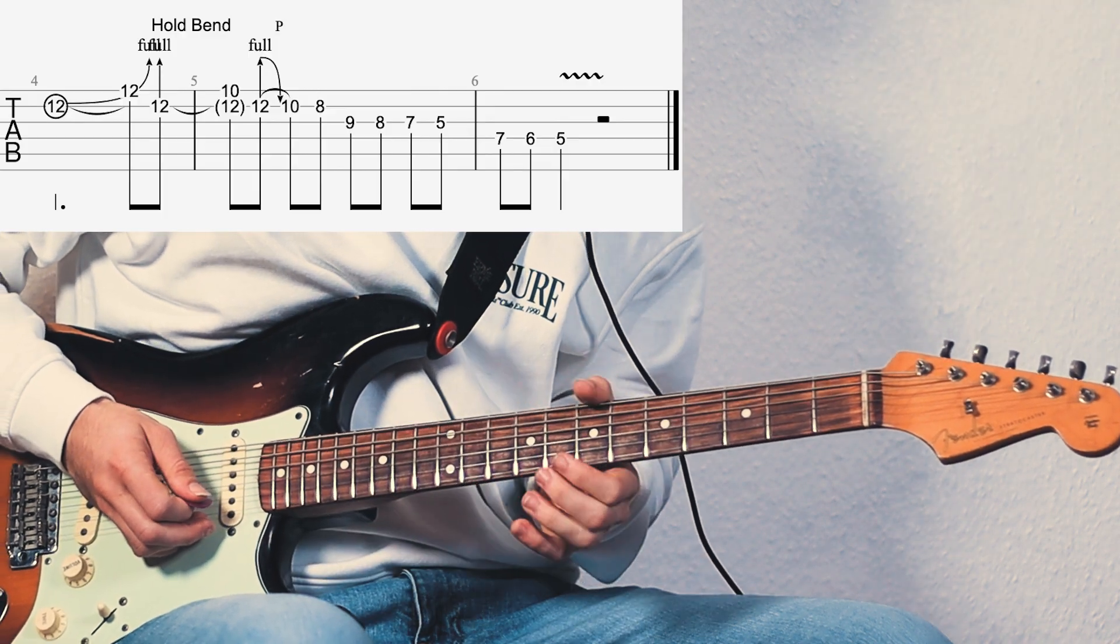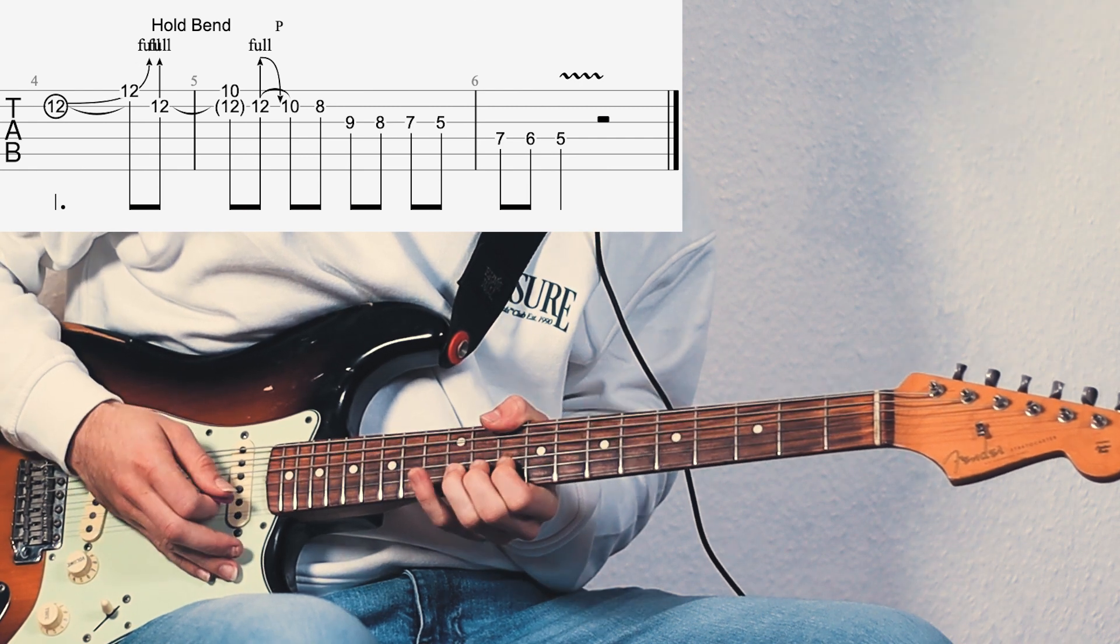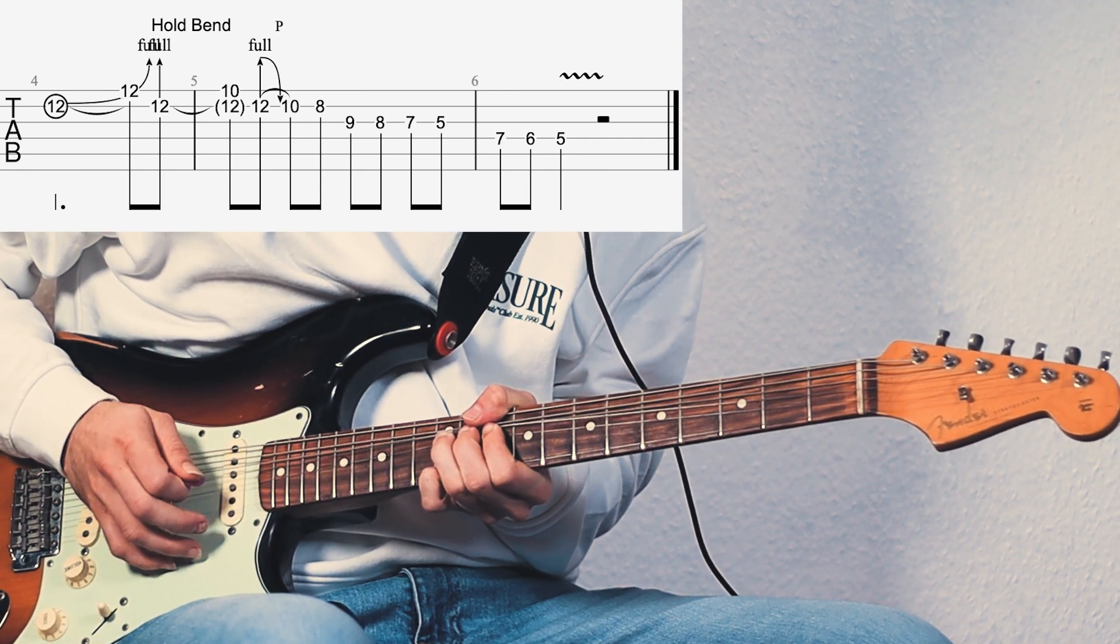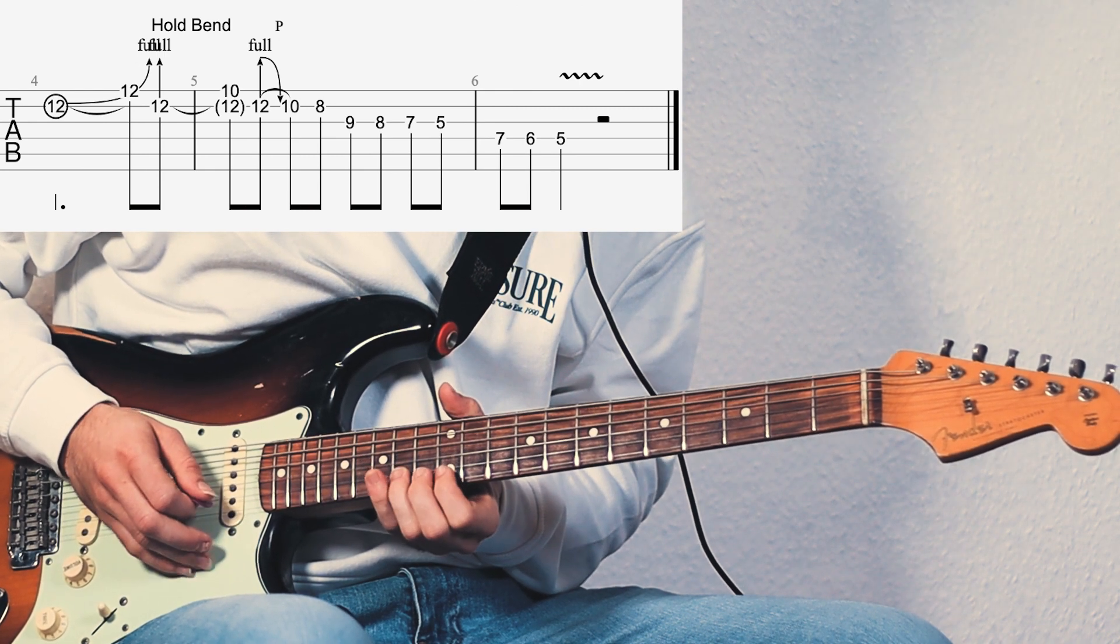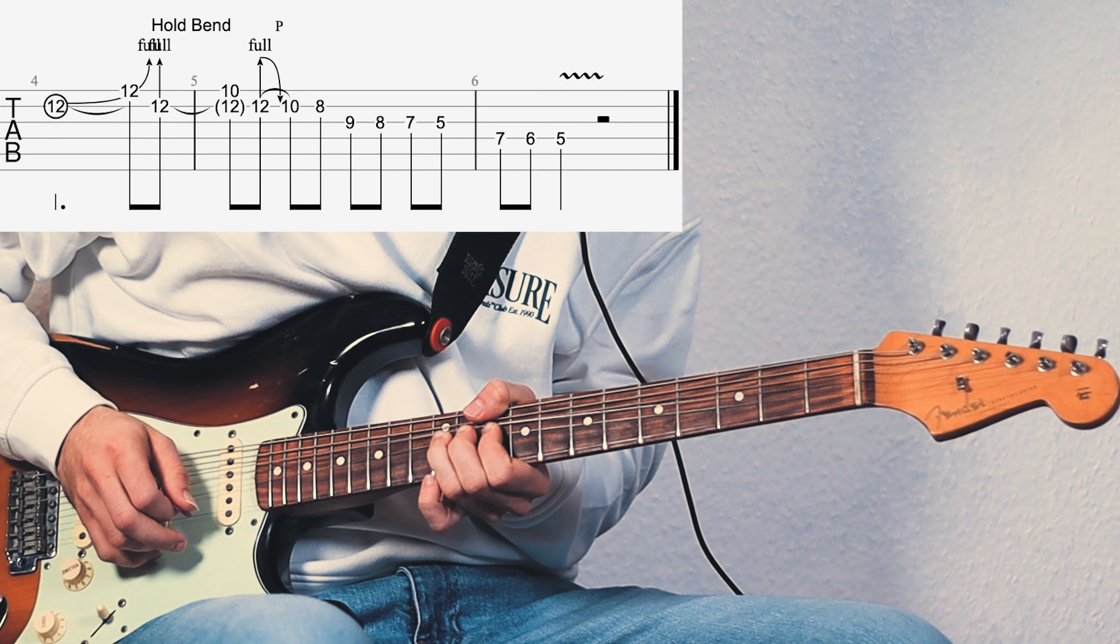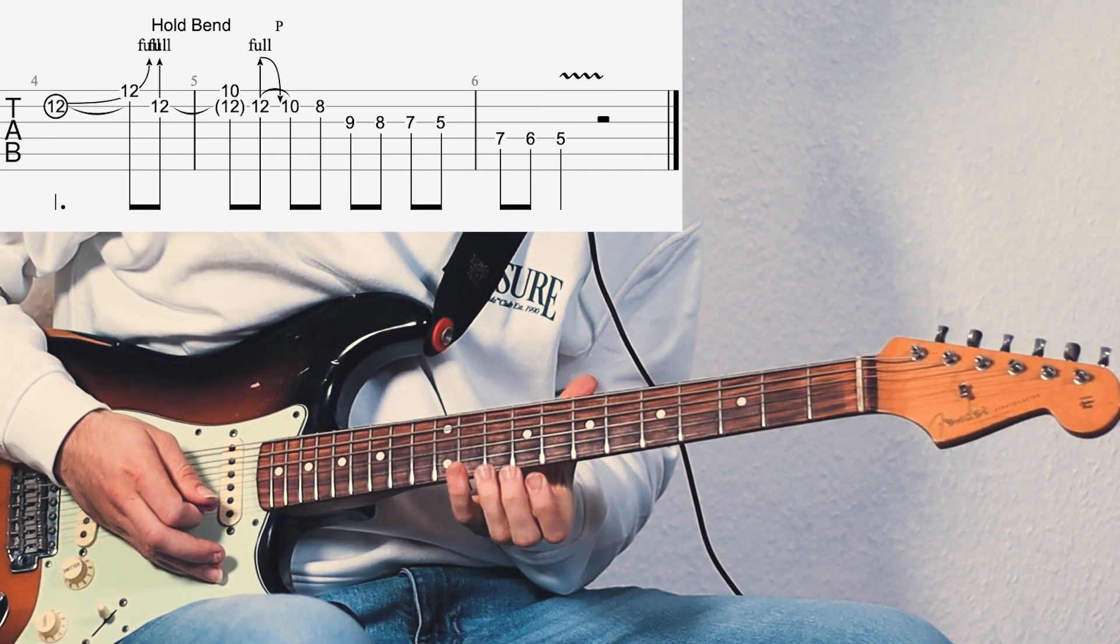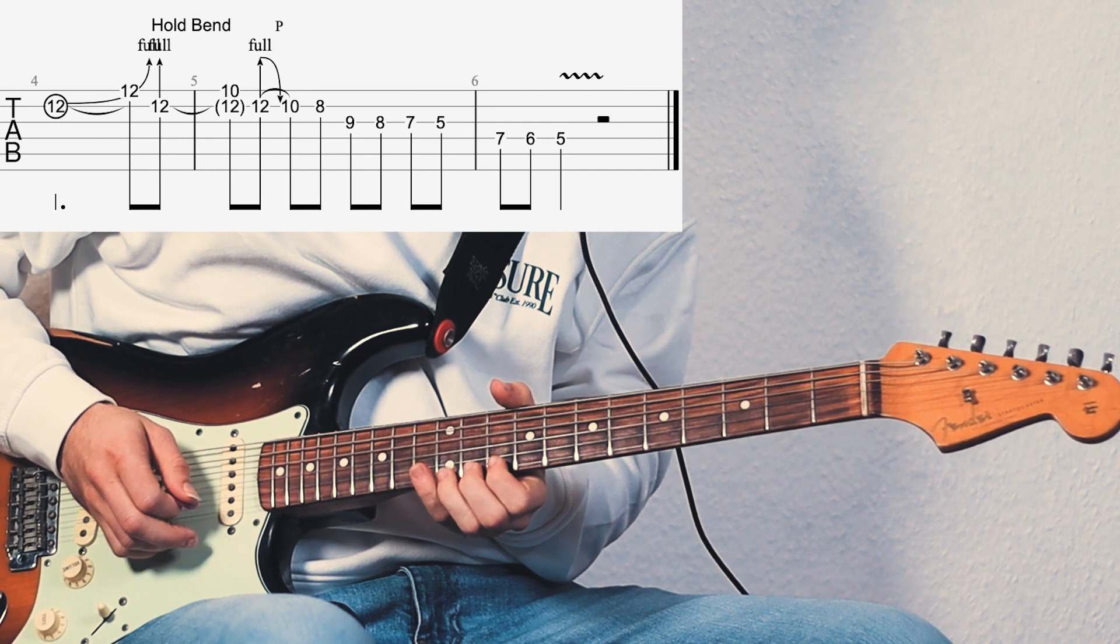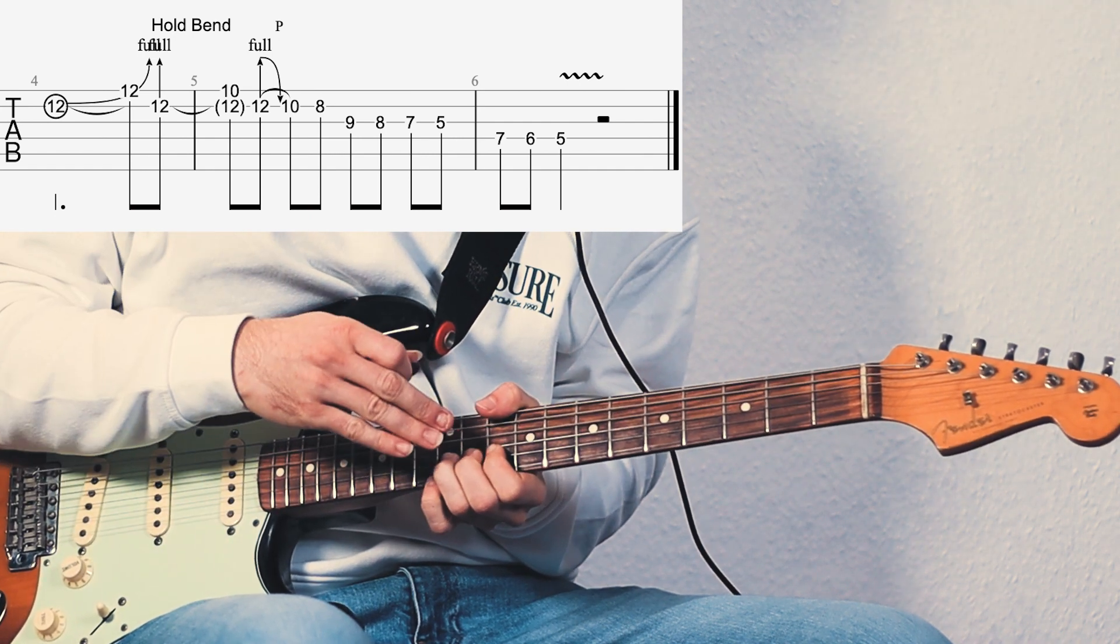Now we are starting out by bending the 12th fret a full step, very gradually. Now we got the 14th fret, this pitch here ringing out, and with our pinky we are grabbing the 12th fret of the E string and we pick the bend up note again.